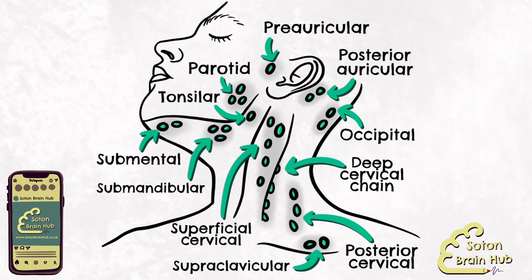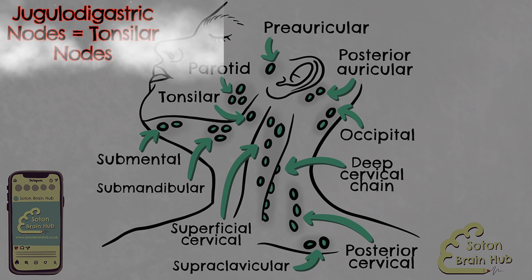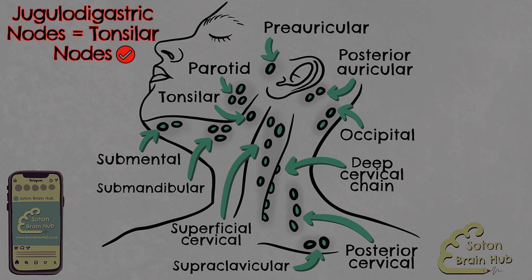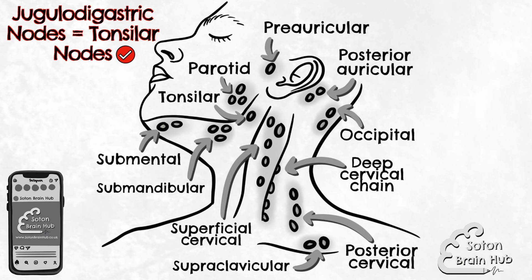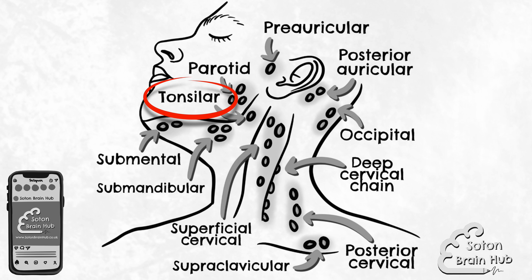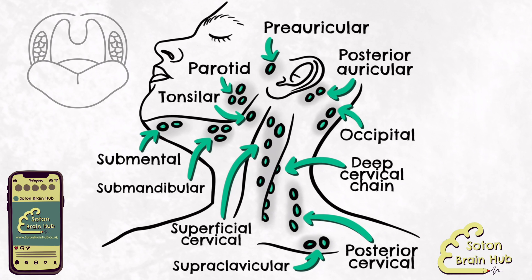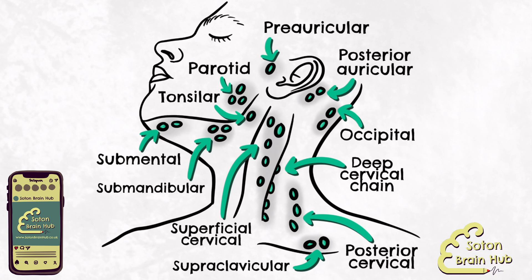The deep cervical lymph nodes in our diagram will be highlighted with the colour red to help you identify them. The upper deep cervical nodes of particular interest are called the jugulodigastric lymph nodes, more commonly referred to as the tonsillar lymph nodes. These tonsillar nodes are contained in the pharyngeal lymphoid ring, a collection of lymphatic tissue surrounding the superior pharynx. Tonsillar lymph nodes drain lymph from the tonsils and can be palpated just below the angle of the mandible. They become clinically relevant particularly in cases of acute tonsillitis where they become enlarged and tender, however they may be palpated in healthy patients with a little practice as they are not obscured by the sternocleidomastoid muscle.